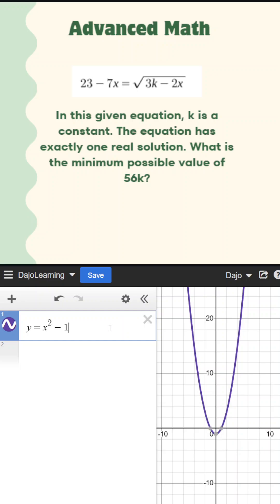So essentially, what I just want you to understand is the only time we'll ever have one solution when it comes to a parabola is when we have the vertex, whether it be a maximum like this, or a minimum like this.